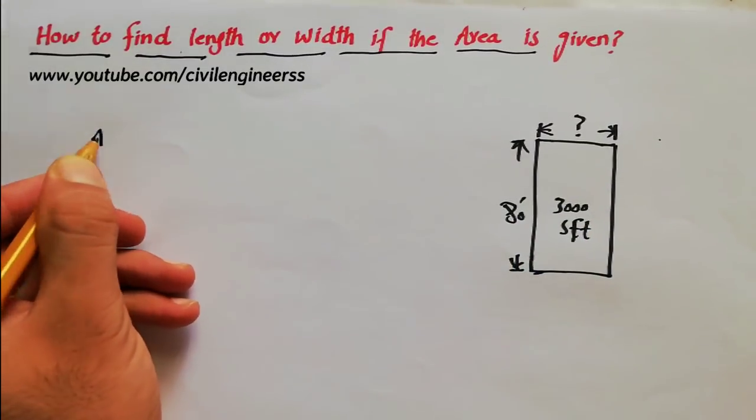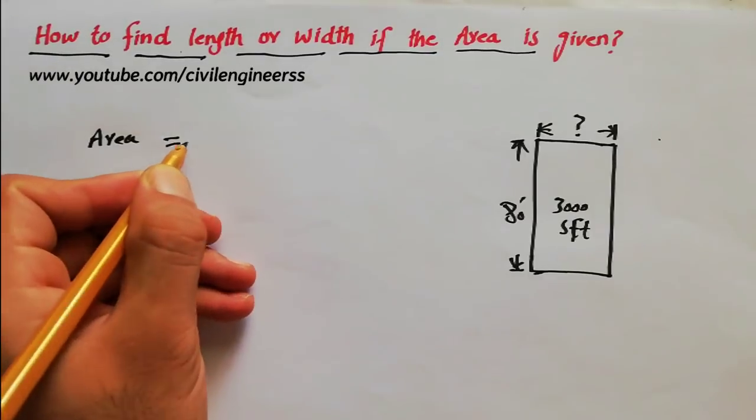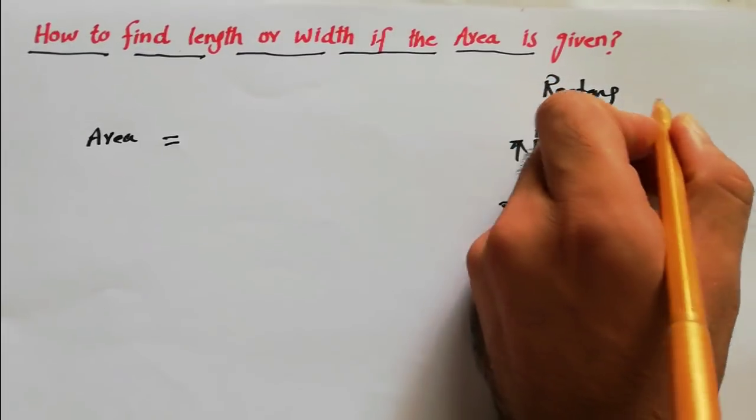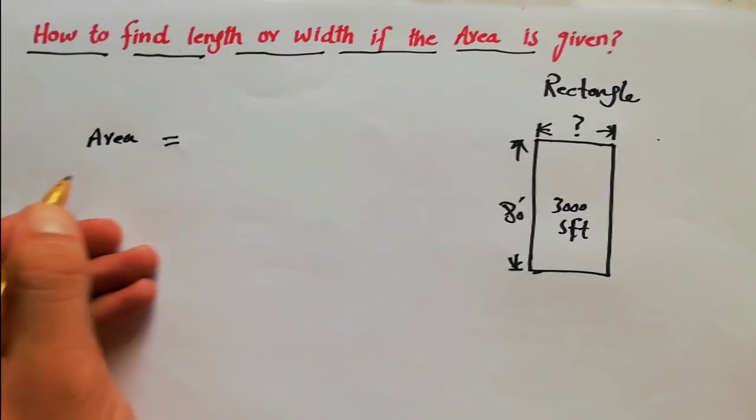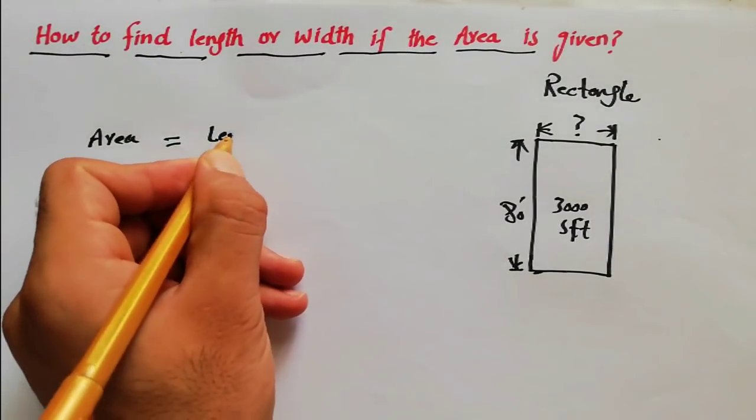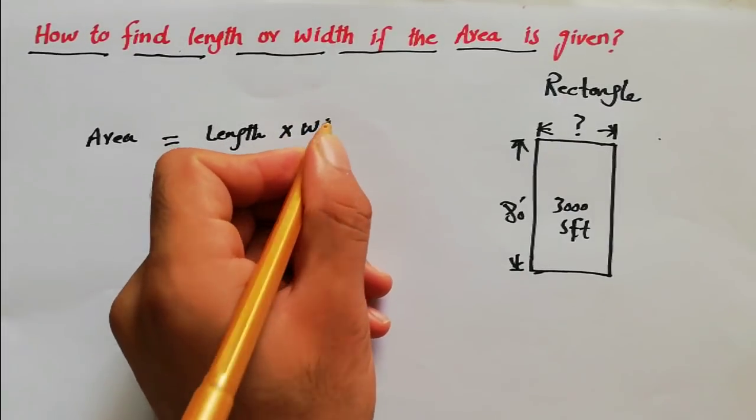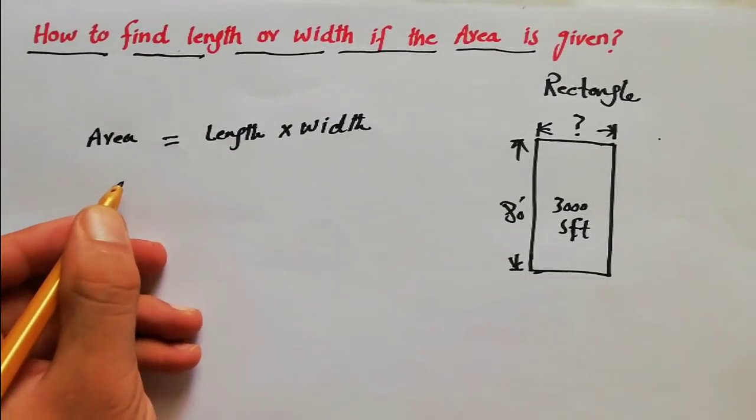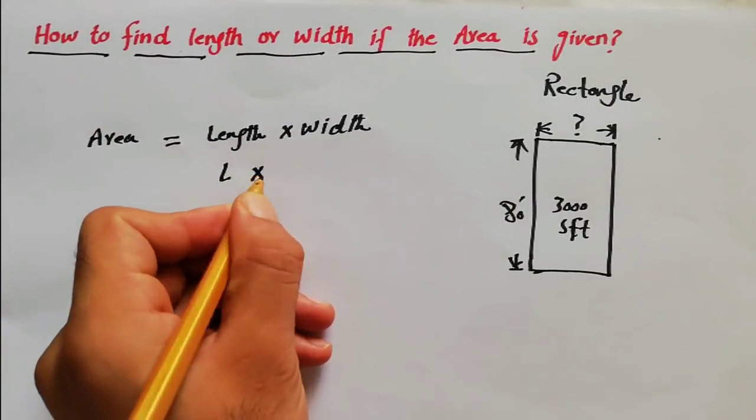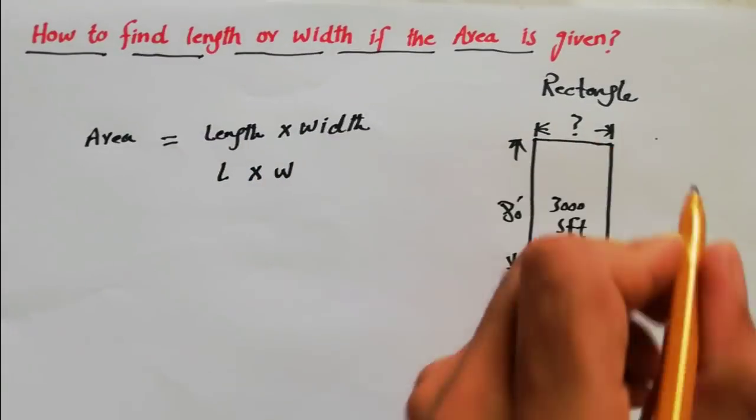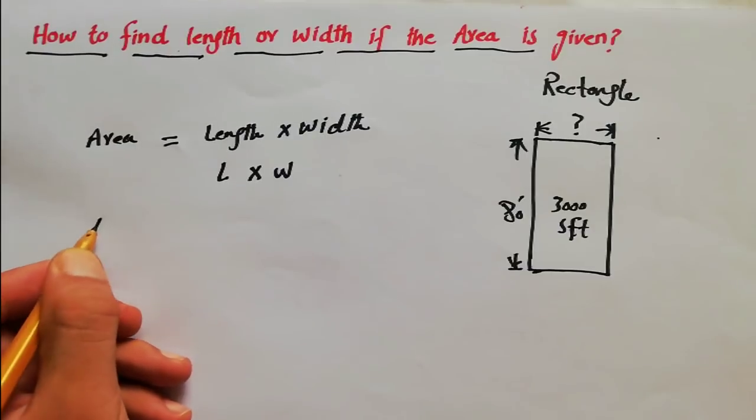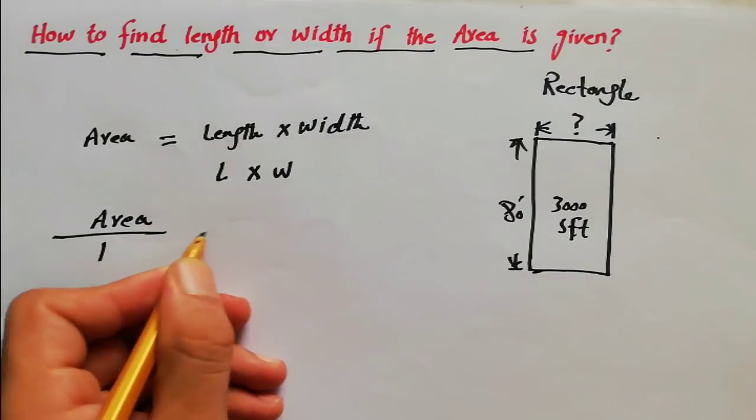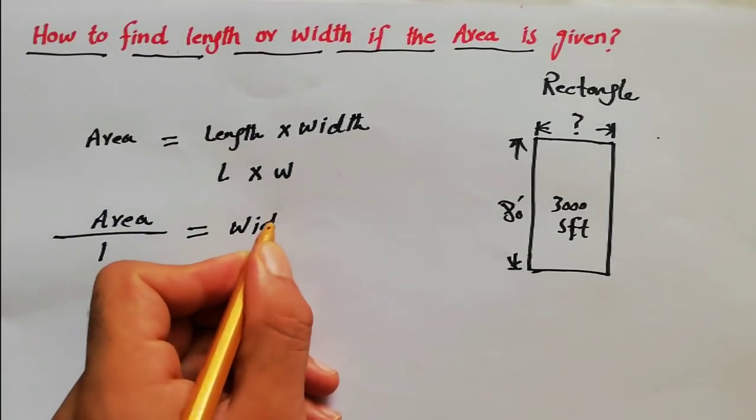We know that area is equal, for a rectangle, area equals length multiplied by width or breadth. So here we can use the formula. We already have the area and length, and we don't have the width. For this you can use the formula: area divided by length, which will give us the width of the rectangular shape.